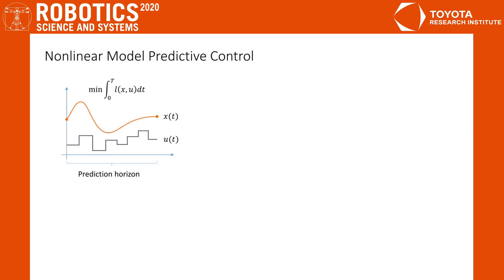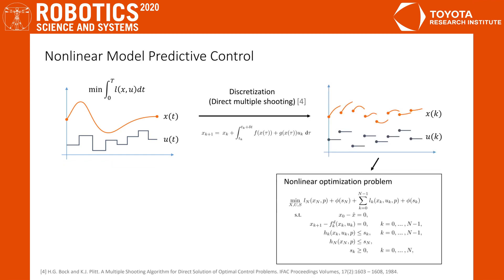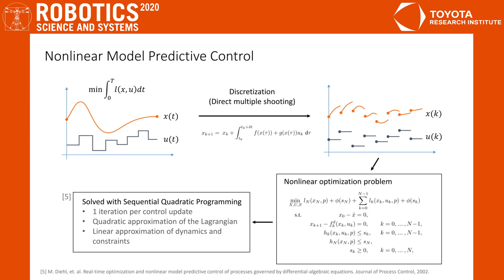This is in direct contrast with non-linear model predictive control, where we use the model of the system to consider costs of future states and input along a certain horizon. The finite dimensional problem is created through direct multiple shooting, resulting in a non-linear optimization problem. We solve this optimization problem through sequential quadratic programming, where each time a new state is received, we solve a single iteration with the linear quadratic approximation made around the previous solution and apply the first input.